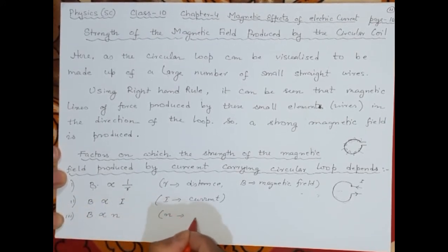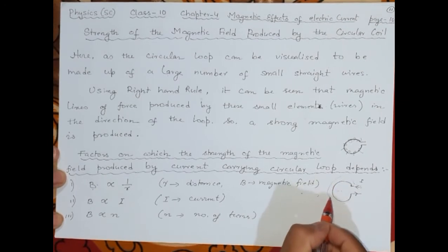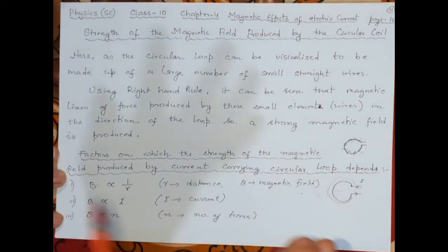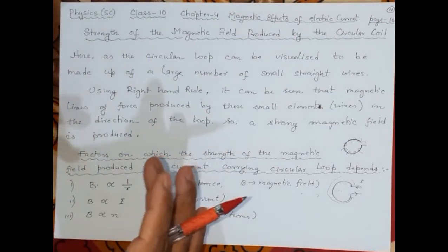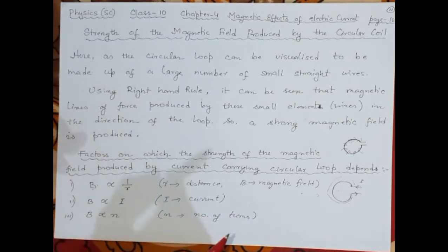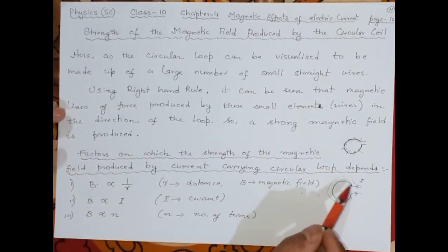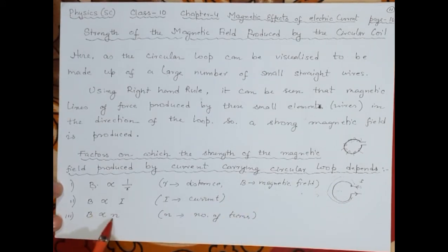One more interesting thing: B will also depend on N, the number of turns. If you have one turn, one magnetic field; two turns, doubled; three turns, tripled; four turns, quadrupled — like that. That is why wherever there are coils, like in transformers or other electronic devices, you will see many many wires wound one after the other — because in order to generate more magnetic field we make many many turns, as it is directly proportional. So three things decide the magnetic field in a circular current-carrying loop: current, distance, and number of turns.